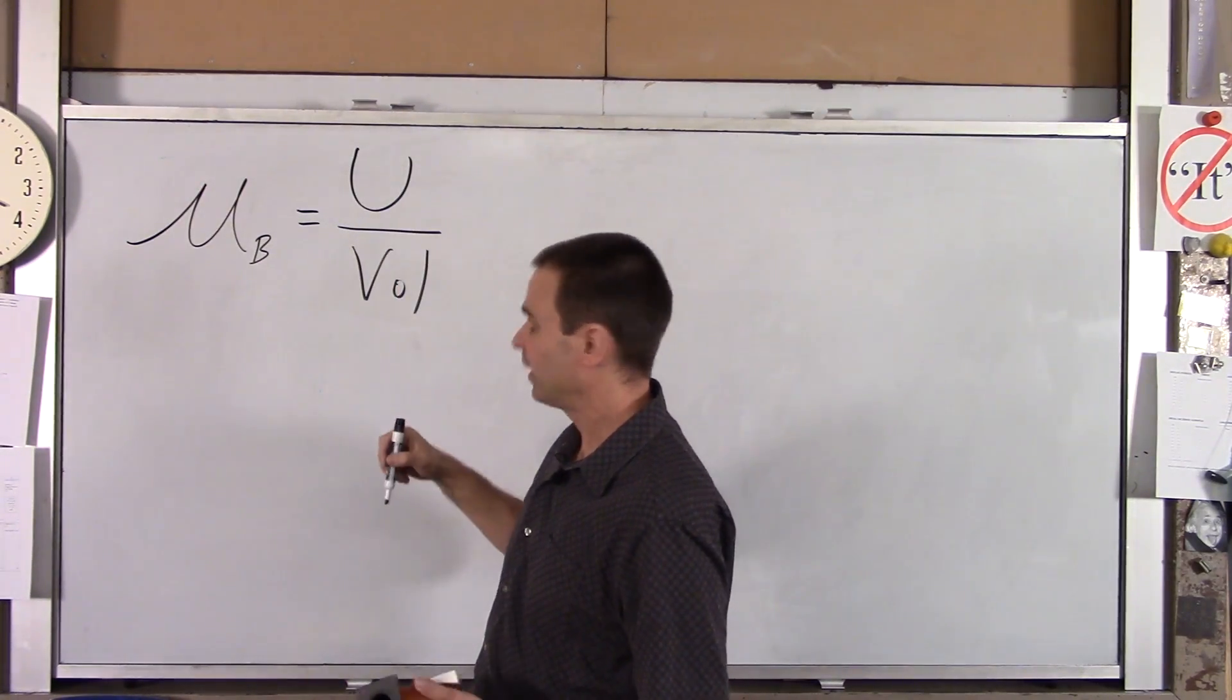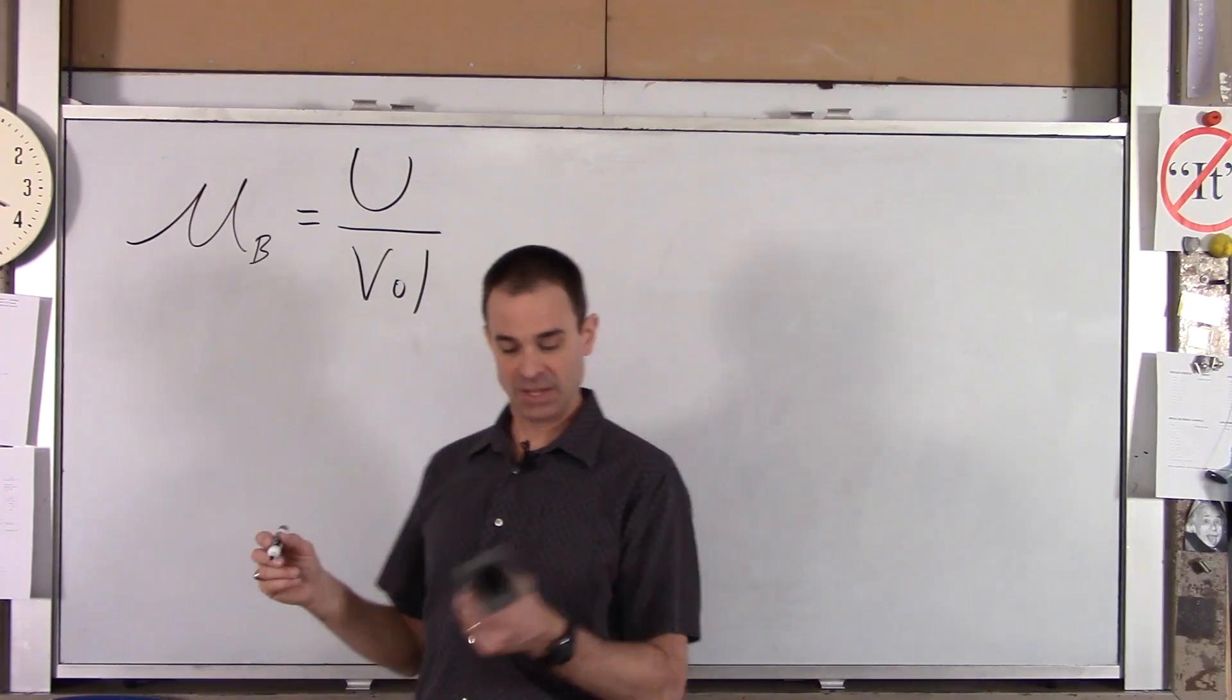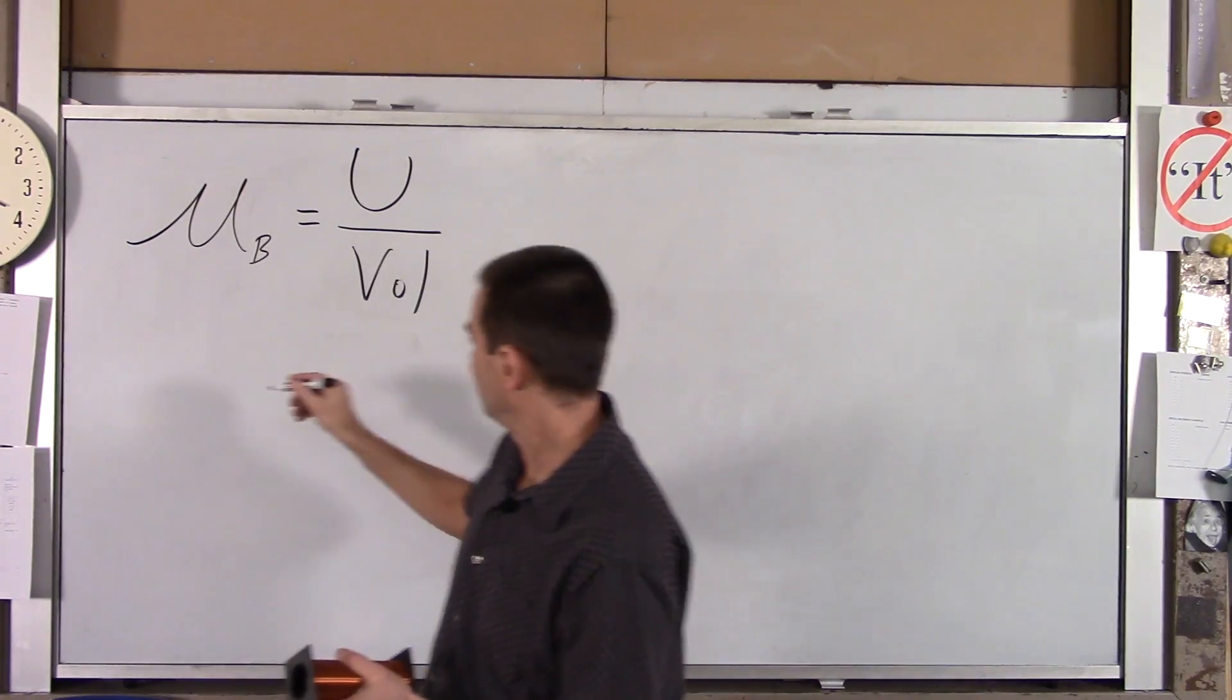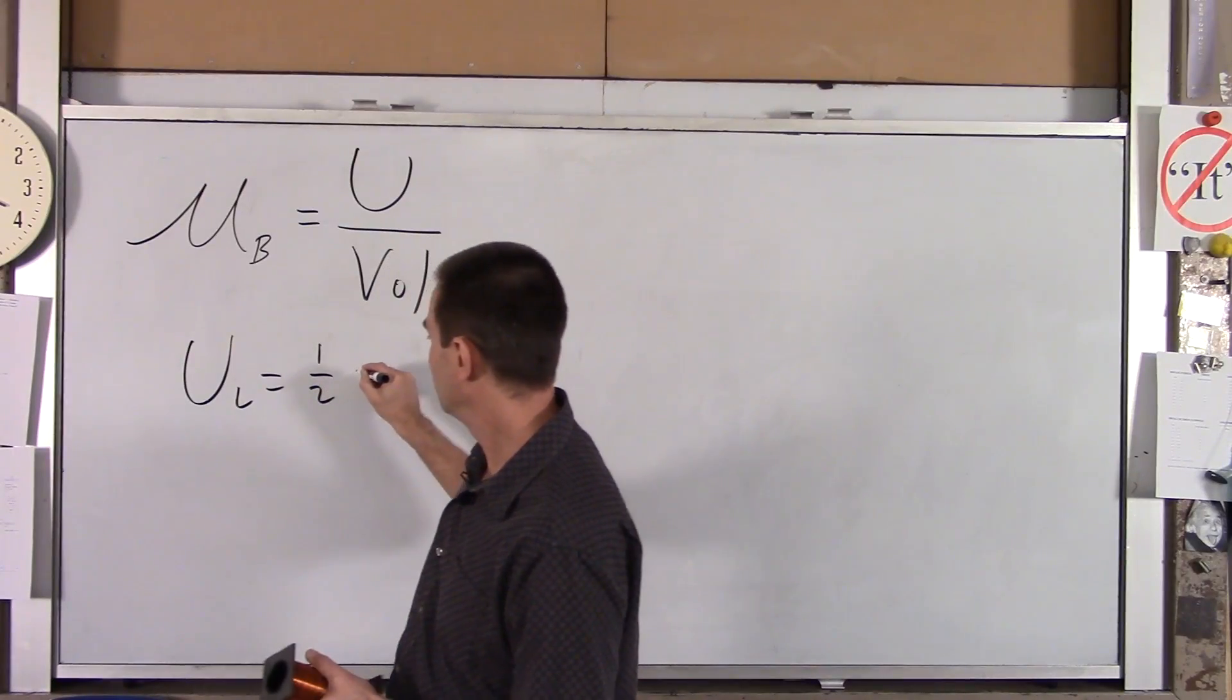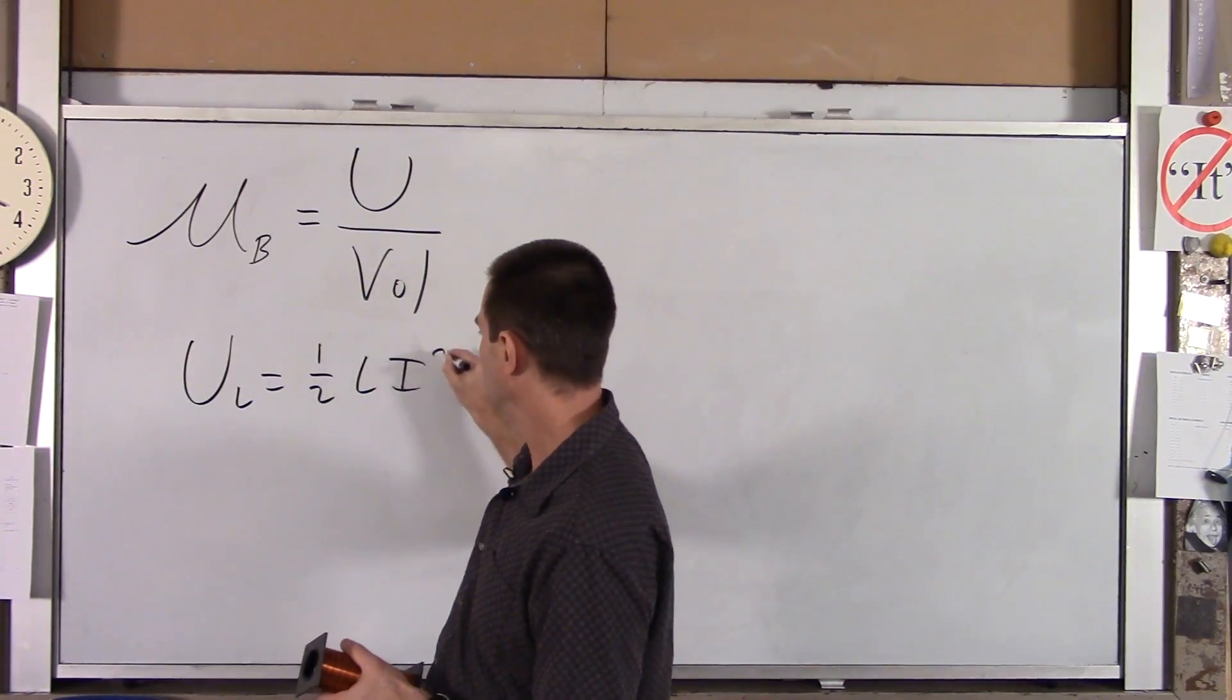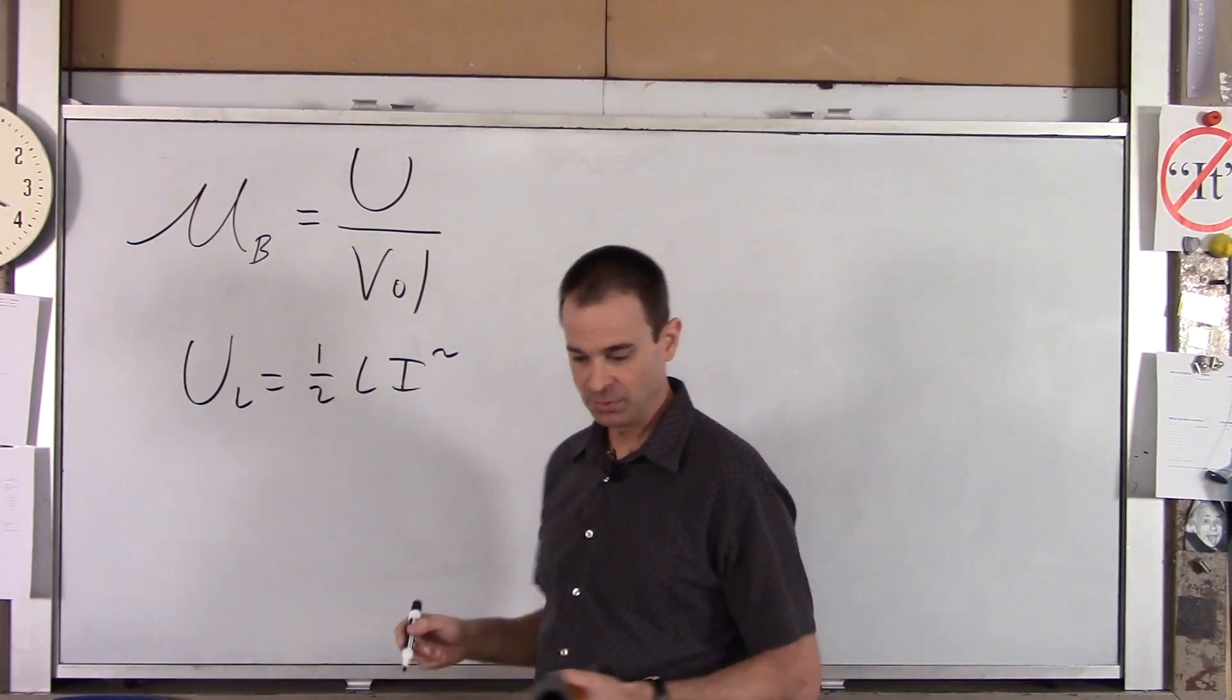Now for potential energy this is an inductor. So potential energy of an inductor is one-half L I squared. So we're going to use that.